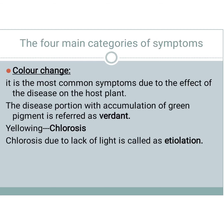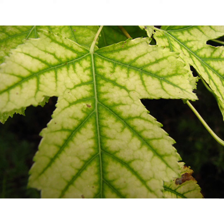The four main categories of symptom are color change, necrosis, hypertrophy/hyperplasia, and hypoplasia. The most common symptom is color change. Virescens means the diseased portion accumulates more green pigment. Chlorosis is when the green pigment disappears entirely and is replaced by yellow pigment — simply yellowing of the leaf or plant. Chlorosis that occurs due to lack of light under dark conditions is called etiolation.